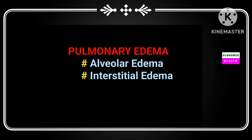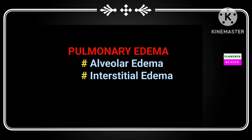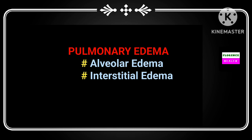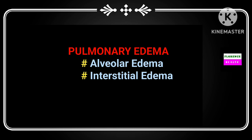Pulmonary edema is not pleural effusion. Pulmonary edema is of two types: alveolar edema and interstitial edema. Normally, alveoli contain air, so alveoli look black in color. When fluid collects inside the alveoli, it is called alveolar edema — in this case alveoli look more white, so the whole lung looks more white. In interstitial edema, fluid collects inside the interstitium, where alveoli still look black, but white lines appear around the alveoli.